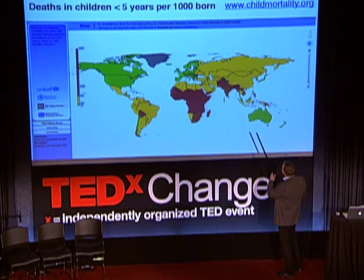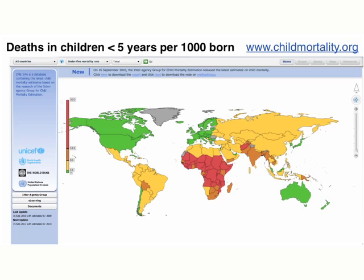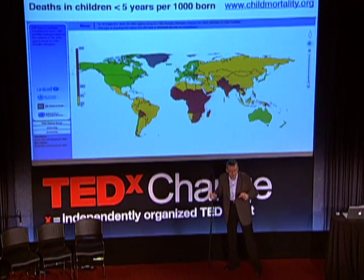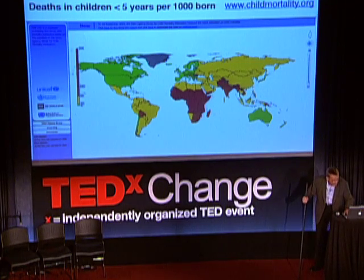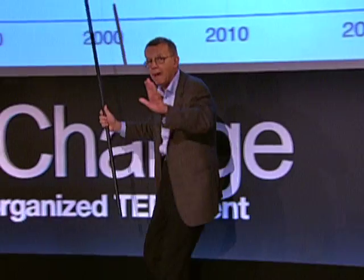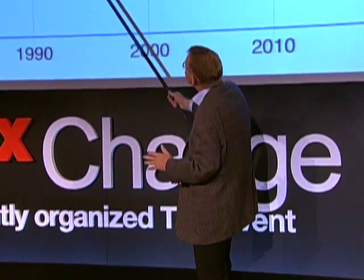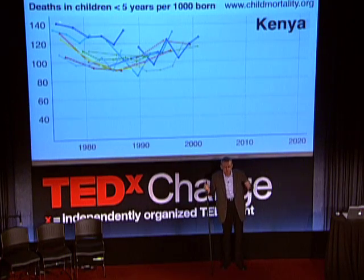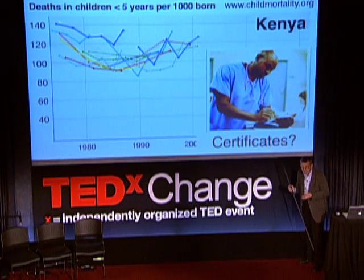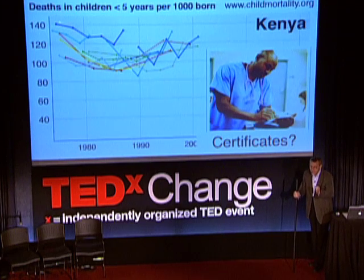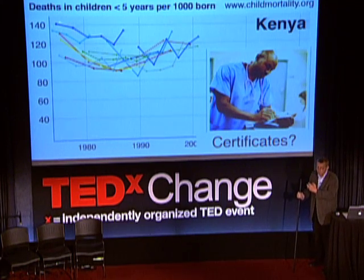Come with me to the wonderful world of statistics. I bring you to the web page childmortality.org, where you can find deaths in children below five years of age for all countries, done by UN specialists. I'll take Kenya as an example. When you see data like this, you have to ask yourself: where do the data come from? In Kenya, low-income countries still don't have complete death registration because so many deaths occur at home with the family and are not registered.